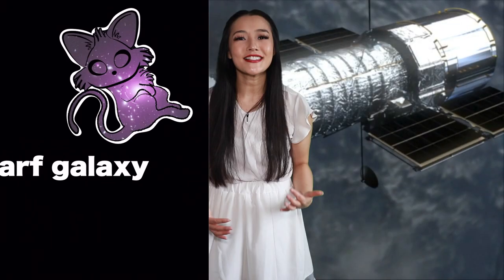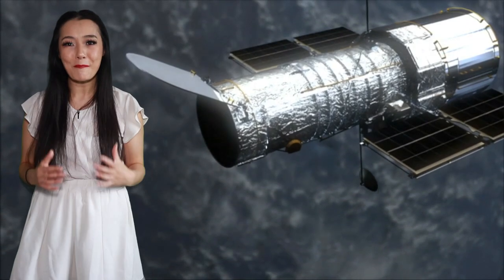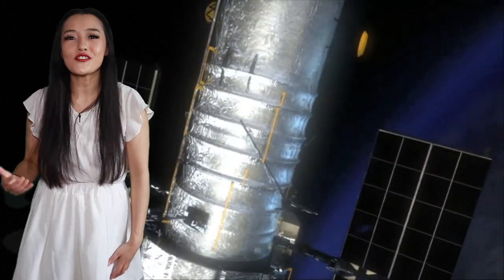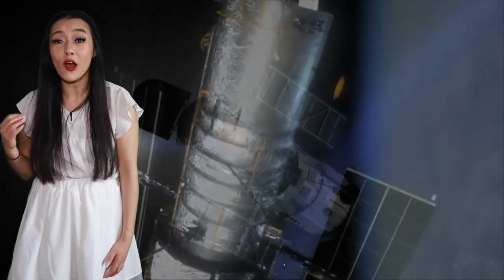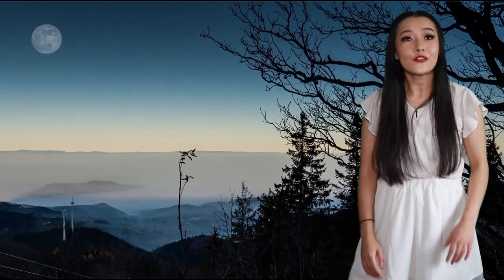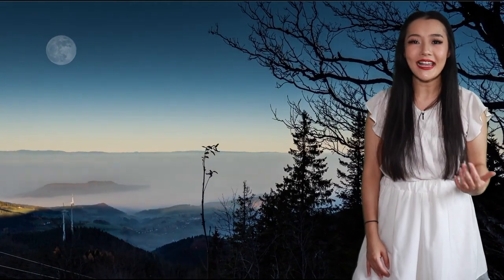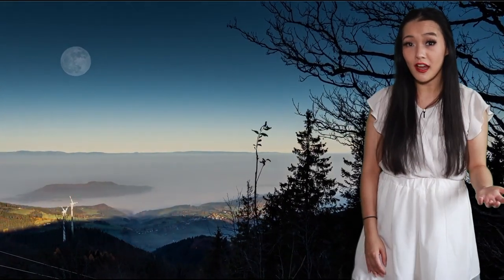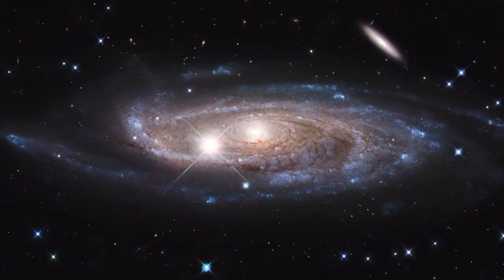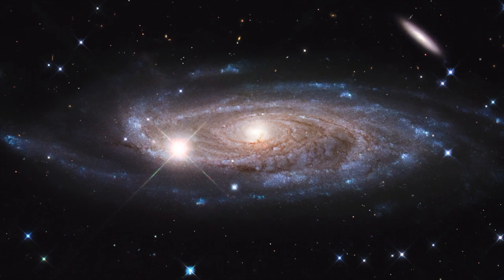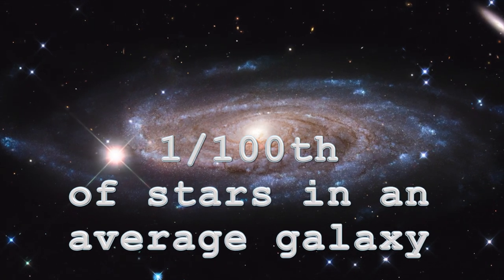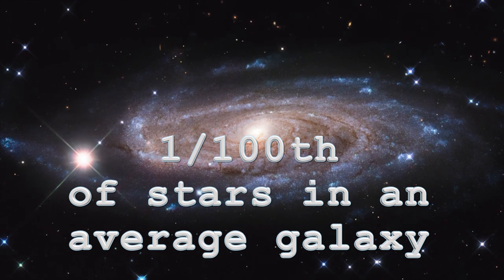So when I say satellites, I didn't mean those man-made metal pieces of junk orbiting around the earth. No, to an astronomer, a satellite is any object that orbits another astronomical body. For example, the moon is a natural satellite of the earth. The Milky Way galaxy also has satellites and these are dwarf galaxies. They are galaxies that contain typically one hundredth of the number of stars of an average galaxy like the Milky Way.